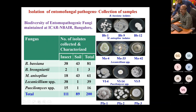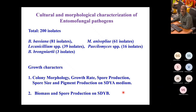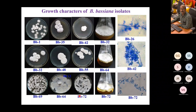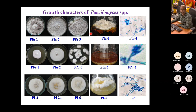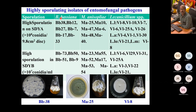You can see the cultural diversity of Beauveria bassiana, Metarhizium anisopliae, Lecanicillium, and Paecilomyces. We perform cultural and morphological characterization including colony morphology, growth rate, and spore production on SDYA medium (Sabouraud Dextrose Yeast Agar). Biomass and spore production are evaluated in broth. We use the ITS primer for molecular sequencing. Species are grouped based on high spore production in media broth.